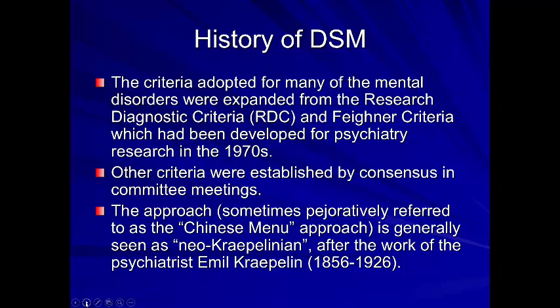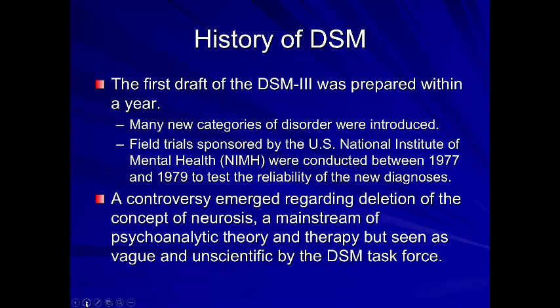The criteria classification system was based on consultation among top professionals from around the world. They wanted to make categorizations based on signs, symptoms, and natural history rather than psychodynamic assumptions about underlying causes — things that were measurable in distinct contexts. The criteria for major mental health disorders were expanded from the Research Diagnostic Criteria and the Feighner criteria developed for psychiatry research in the 1970s, with other DSM-3 criteria established through consensus committee meetings.